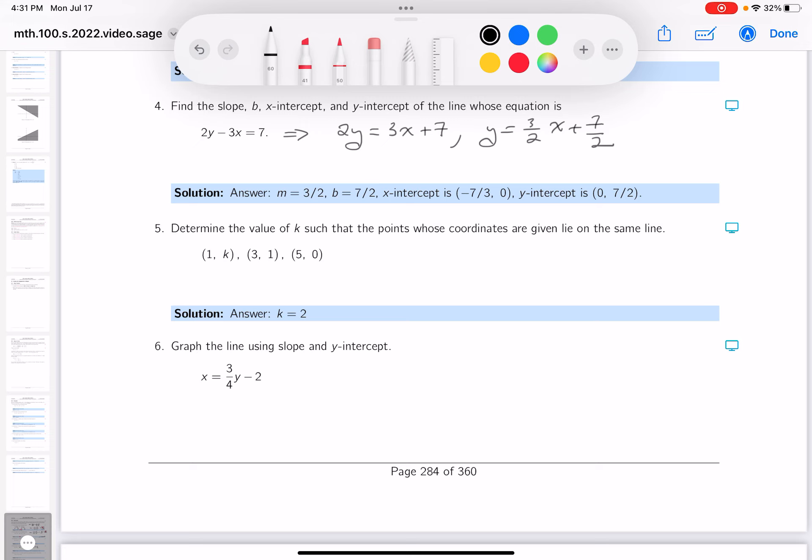I can start answering some of the questions pretty quickly. For example, slope m, that's going to be 3 over 2. I could put the b down pretty quickly. What's the b going to be? The b is going to be 7 over 2.